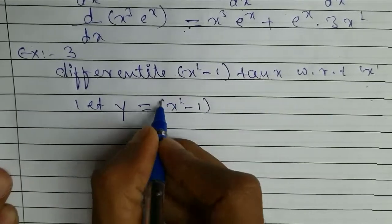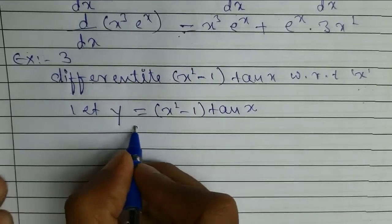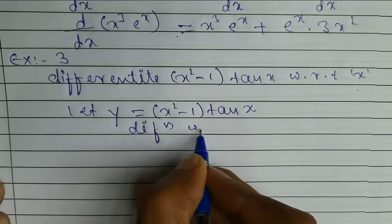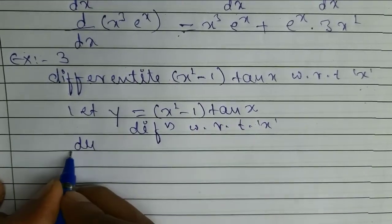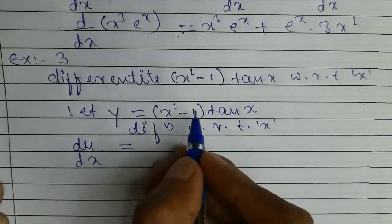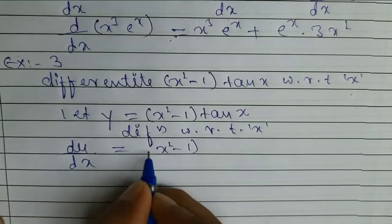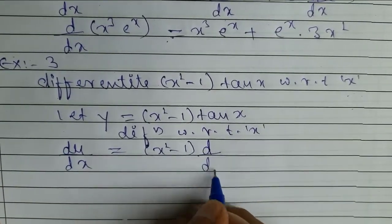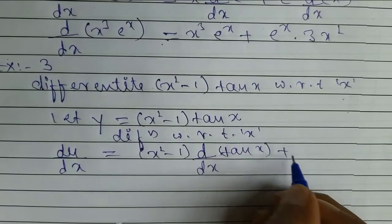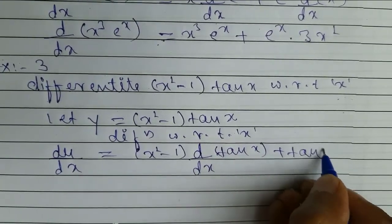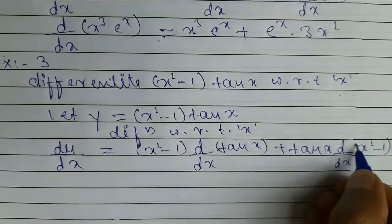The next question: let y be equal to x square minus 1 into tan x. So I will differentiate here, differentiating with respect to x. So dy by dx — it is in the product form — so I will write x square minus 1 as it is, d by dx of tan x, plus I will write tan x as it is, differentiation of d by dx of x square minus 1.